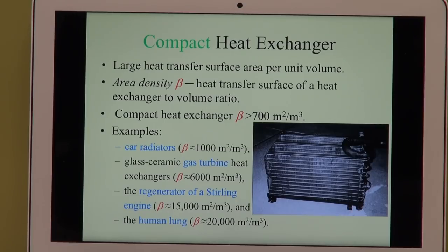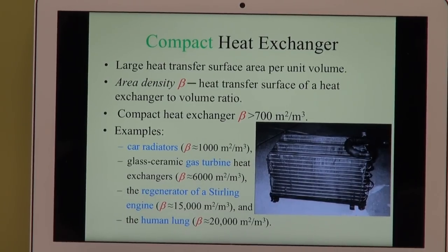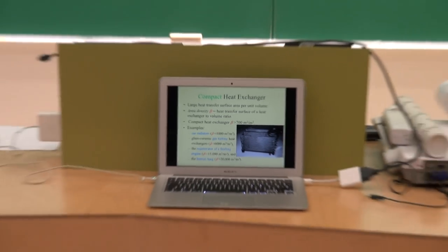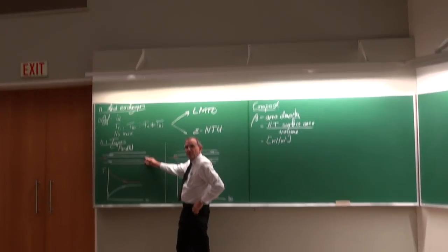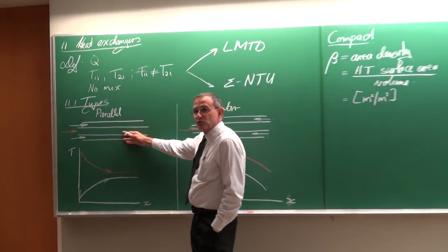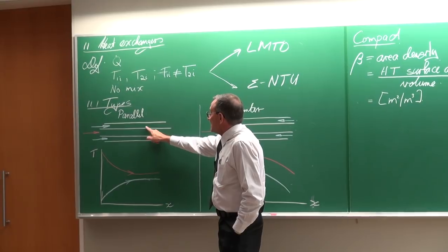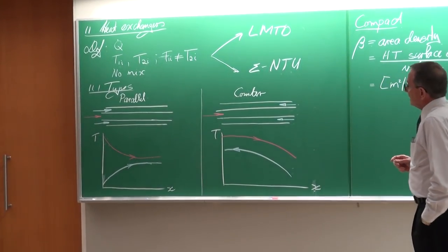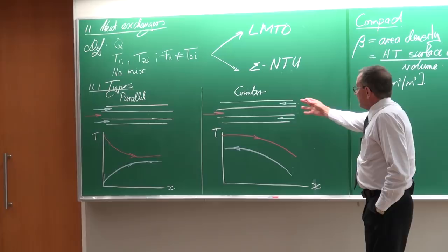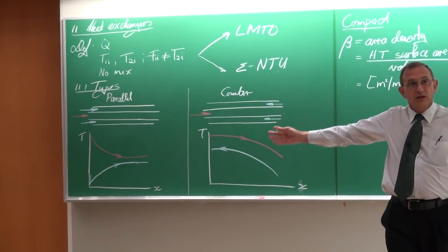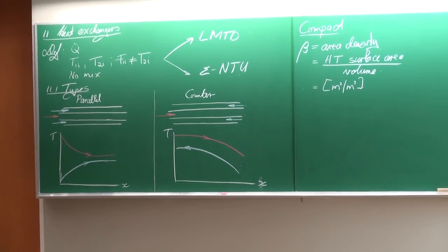Many people would say that's not a good idea — the heat exchanger should be made from copper because of its higher thermal conductivity. But I will get to the rationale of why we often do not do that a little later.